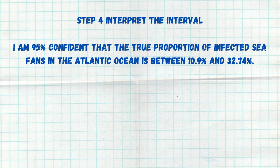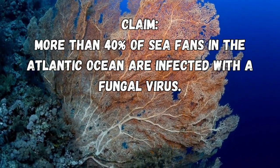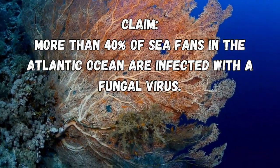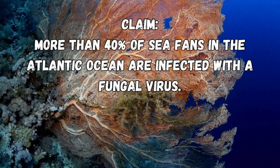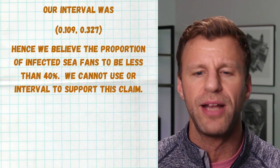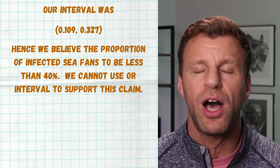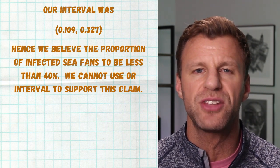That's how simple the four steps are to construct a confidence interval. The second thing you need to be able to do is use confidence intervals to make justifications about claims. Going back to our sea fan example — let's say somebody claimed that more than 40% of sea fans are infected. Does our interval support that claim? The answer would be no. Our entire interval was below 40% — it went from 10.9% to 32.74% — so we're 95% confident that under 40% of sea fans are infected.